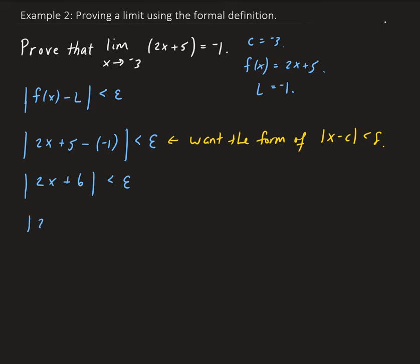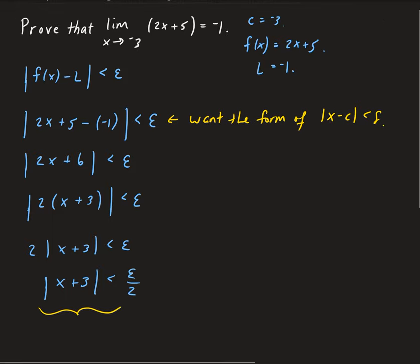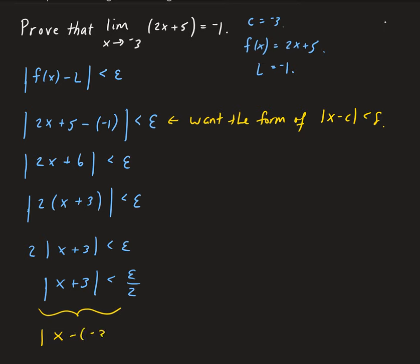From here we can go ahead and factor out a 2, and then take the 2 outside the absolute value. We get the absolute value of x plus 3 less than epsilon over 2. This is nothing more than x minus negative 3 less than epsilon over 2, which is in the form of x minus c where c is negative 3. So that is the delta we want to use — we want to use delta equal to epsilon over 2.